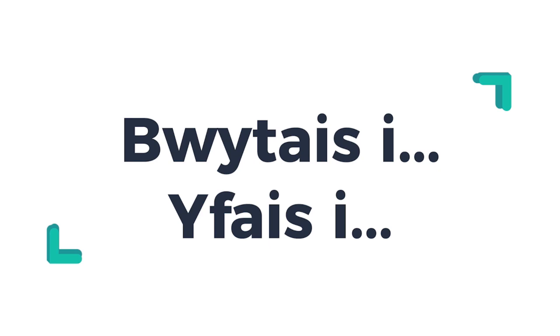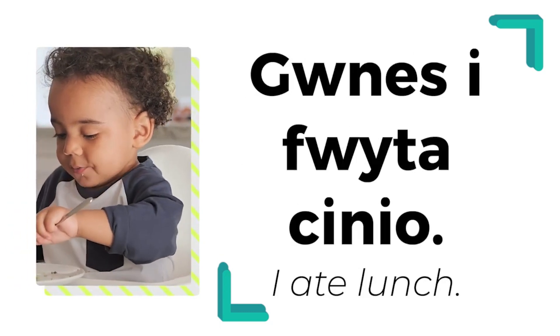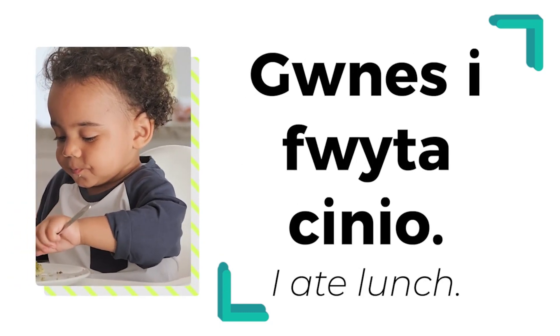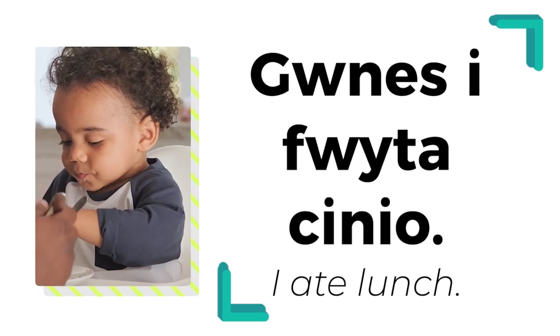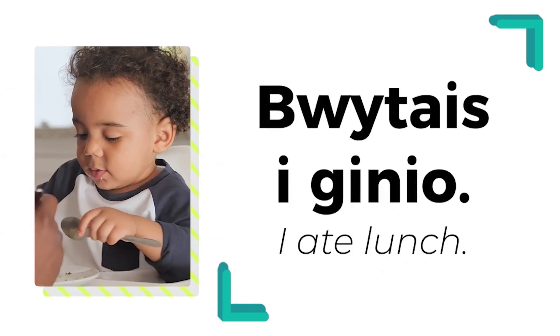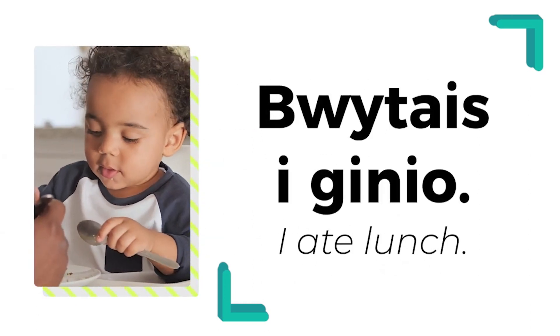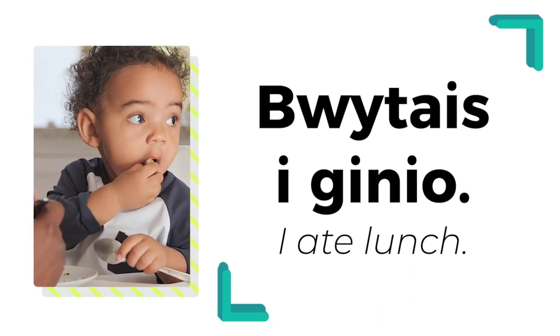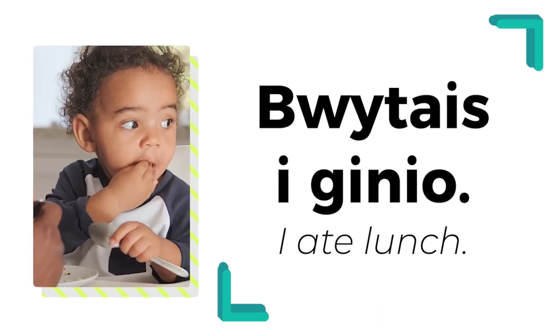In this unit, you will learn another way of expressing the concise past tense. This form is more widely used in South Wales. Do you remember? Gwnes i fwyta cinio — meaning I ate lunch. Now, dysgwch: bwytais i cinio — also meaning I ate lunch.